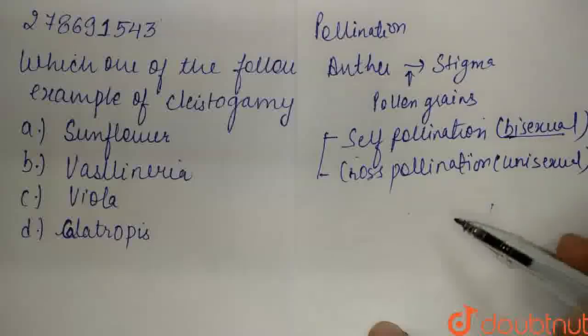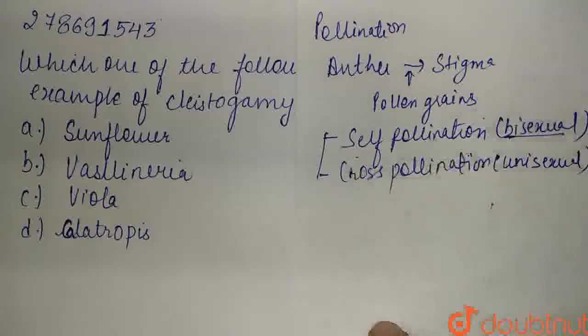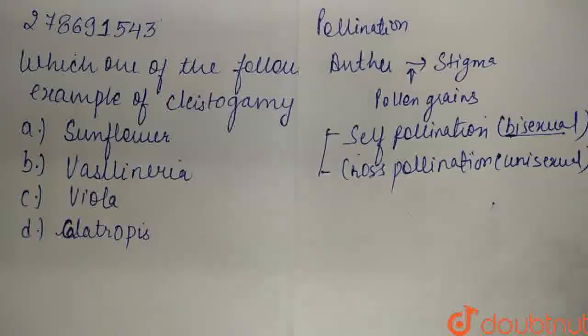So guys, in bisexual flowers both conditions are possible. But in cleistogamy what happens? The flower itself is closed. So there, the chance of cross-pollination is completely eliminated. That flower will be bisexual and closed. So guys, the pollen grains from that flower's anther land on that same flower's stigma. So this is what we call cleistogamy.